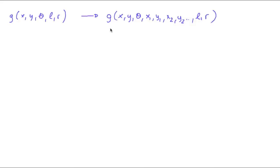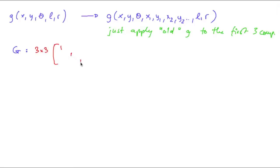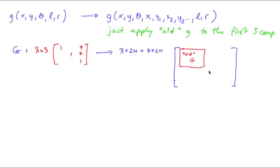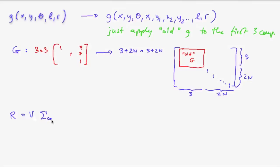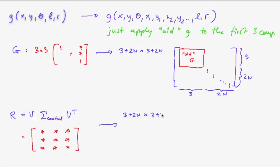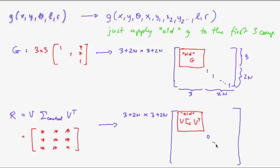This is a pretty comfortable result. Our old G is replaced by our new G, but there's nothing fundamentally new to do — just apply the old G to the first three components. Our Jacobian matrix G, which was 3×3, is replaced by a (3 + 2n) × (3 + 2n) matrix, where the original matrix is in the upper-left corner, ones on the main diagonal for the landmark entries, and 2n additional elements. Similarly, our R, which was V sigma_control V^T — a 3×3 matrix — is replaced by a (3 + 2n) × (3 + 2n) matrix, where the first 3×3 block is the old V sigma_control V^T and everything else is zeros.